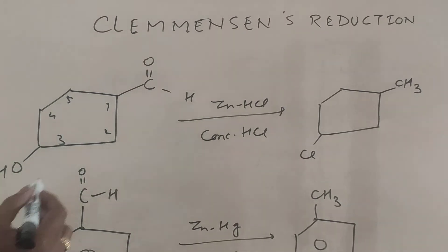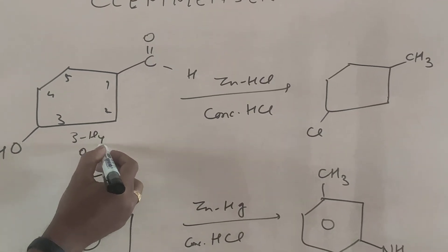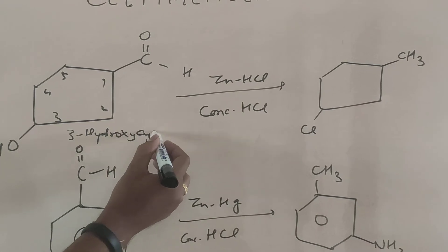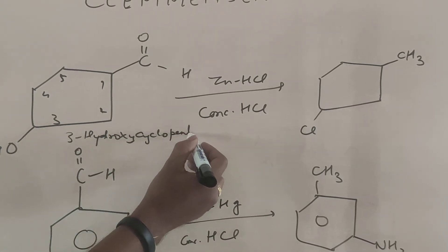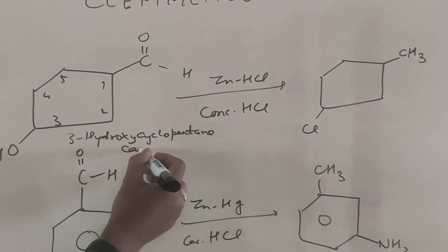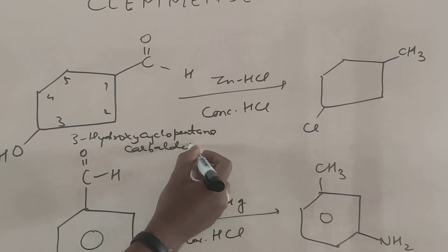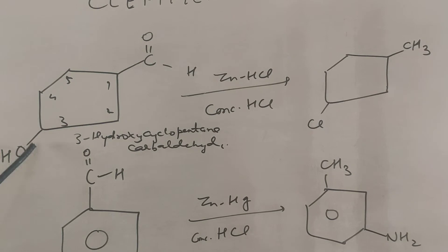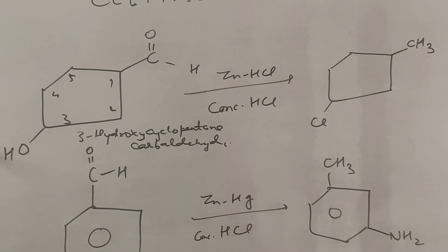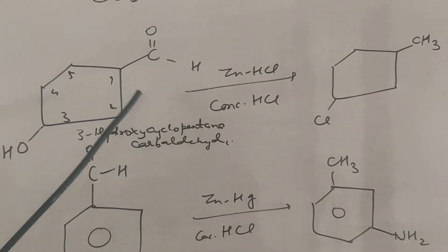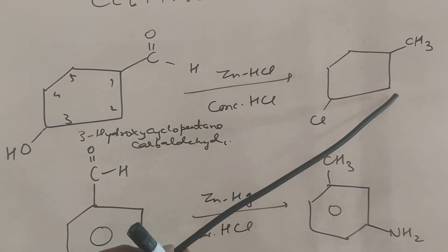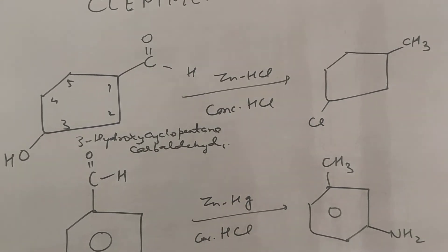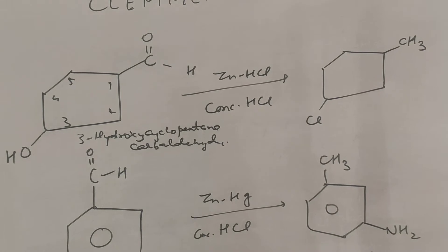Suppose we have 3-hydroxycyclopentanecarbaldehyde. In this case, the aldehyde is reduced and the hydroxyl group is substituted with chlorine. The product formed is 1-chloro-3-methylcyclopentane.